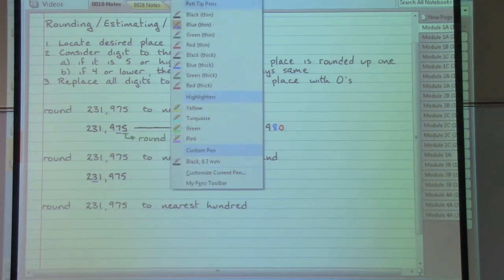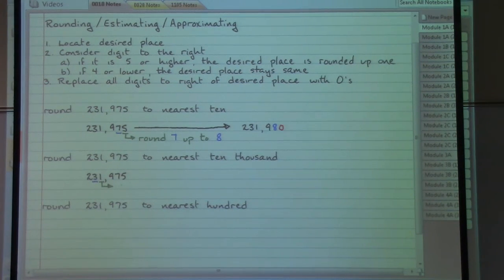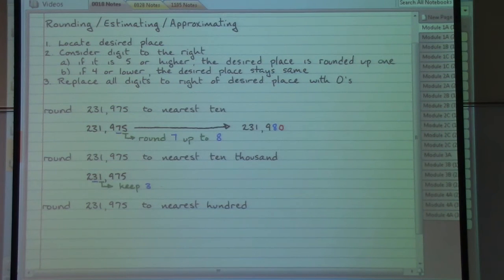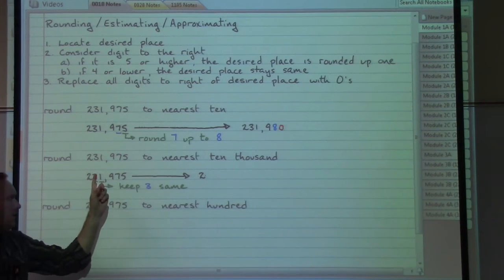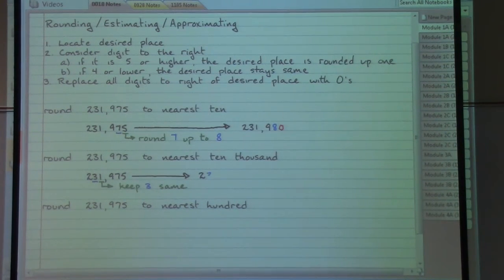Step two says that we want to look at what is to the right of this. To the right of this we have a one, which means that we would want to follow part B. If we have a four or lower, the desired place stays the same. So we can say keep the three the same. What that means for us is that anything that was out at the front is going to also stay exactly the same as it originally was. The very next spot that we hit, we're saying we're going to keep the three the same, so in our final answer we're going to have the three showing up next.